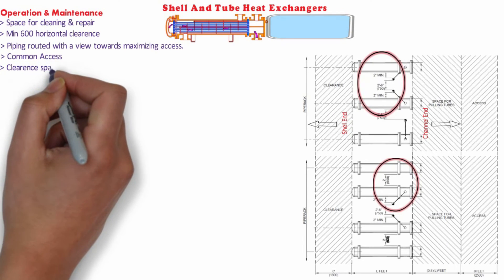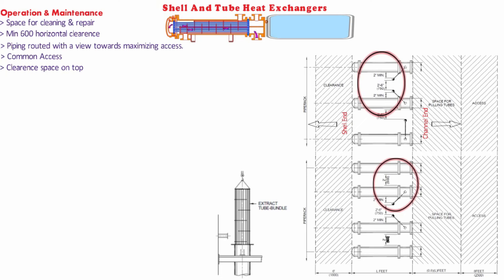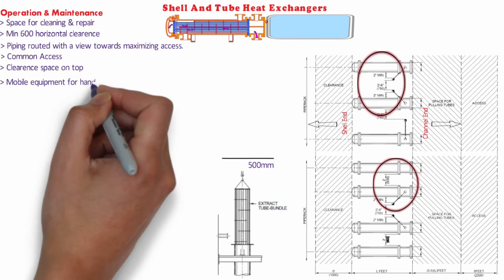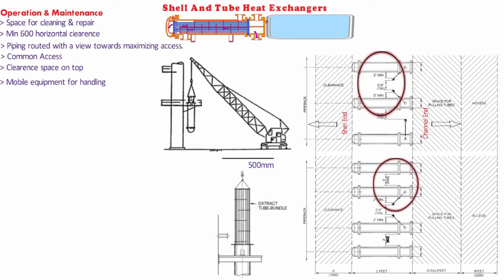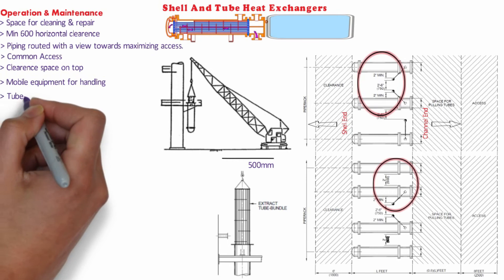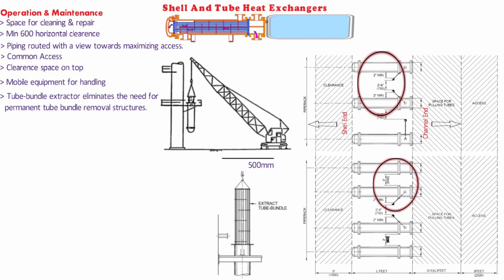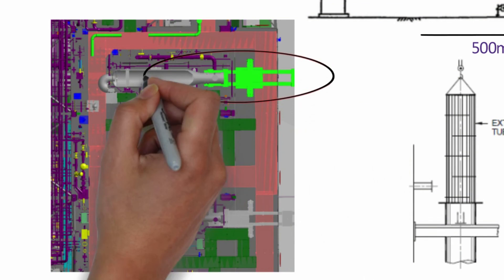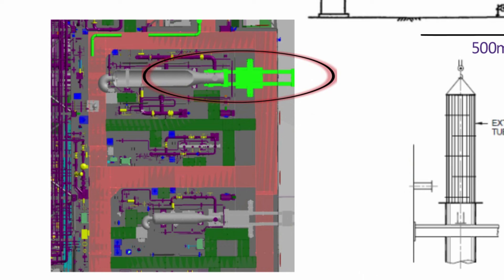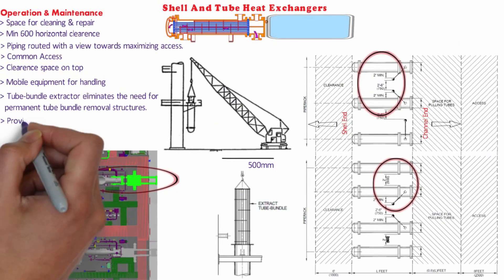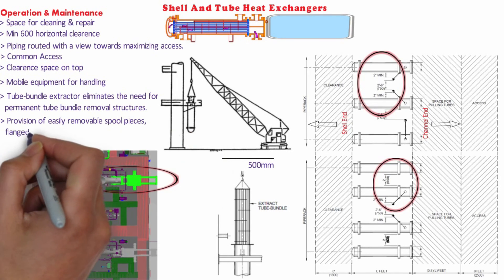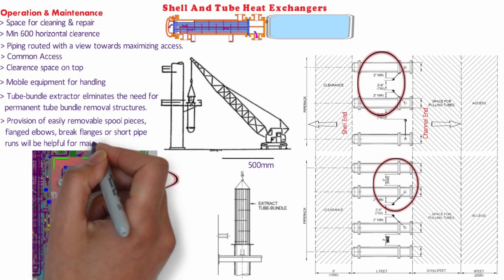With exchangers that have no removable serviceable components, suitable arrangement and clear space on top for removing the entire exchanger can be provided. Access for tube bundle removal is usually 500 mm more than the tube bundle. Mobile equipment should be used for handling tube bundles and covers at grade level. Expensive built-in facilities, for example lifting beams or mono rails, should be kept at minimum. The use of a tube bundle extractor eliminates the need for permanent tube bundle removal structures. These mechanisms weigh around 7 tons and are capable of pull forces of about 500,000 lbs. The tube bundle is held in position by crane and balanced by the extractor's leveling cradle, and pulled out of its shell with pull rod attachments that have hydraulic force. Provision of easily removable spool pieces, flanged elbows, brake flanges, and short pipe runs will be very helpful for maintenance of exchangers.